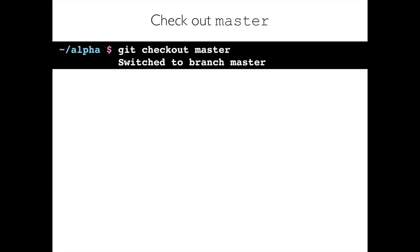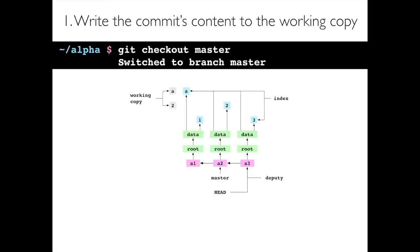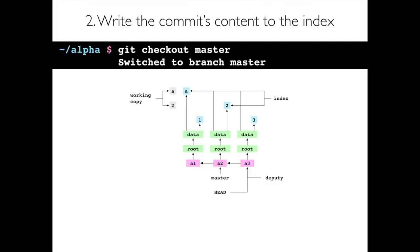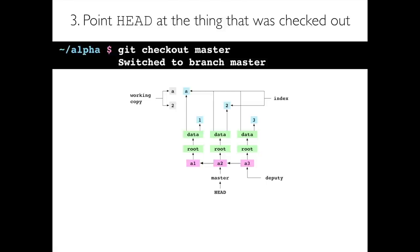Now let's check out a branch — more usual than checking out a commit. We do git checkout master and Git says it switched to branch master. Walking through the steps: first, write the commit's content to the working copy — we were on A3 and now checking out A2, so the working copy now contains A and 2; second, write the commit's content to the index — set to represent A2; third, point HEAD at the thing checked out — HEAD now points at master, so we're no longer in a detached HEAD state.